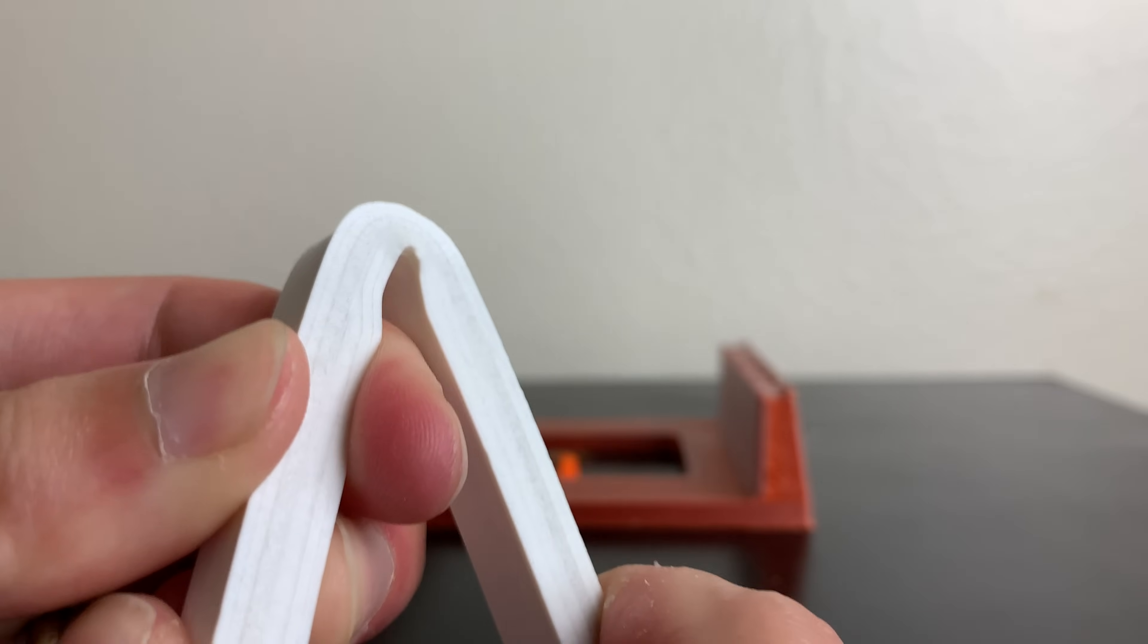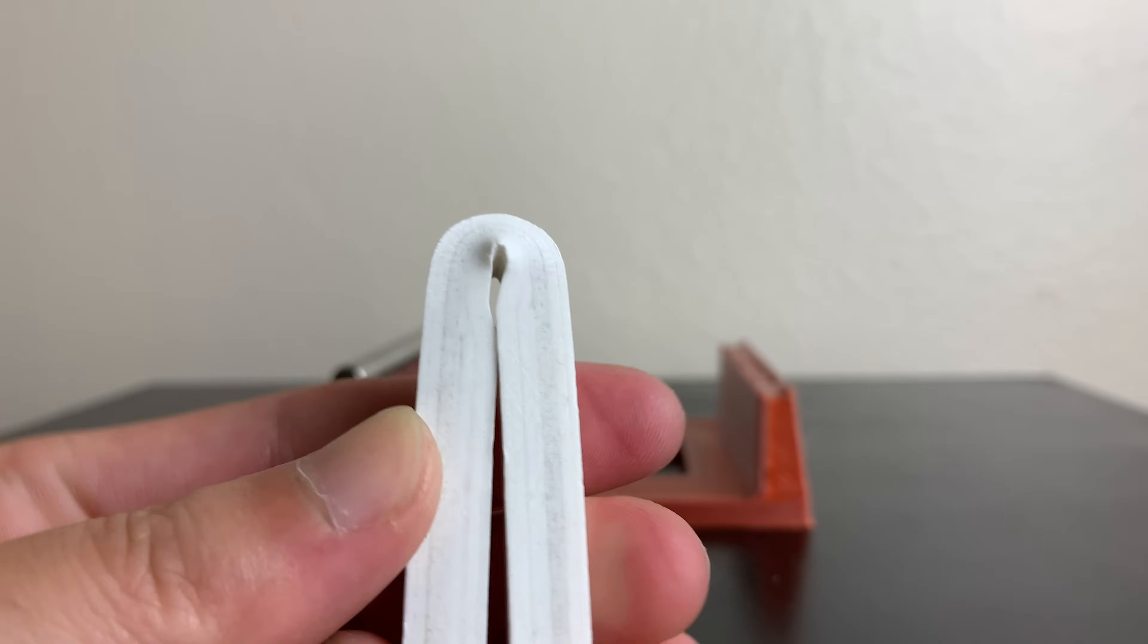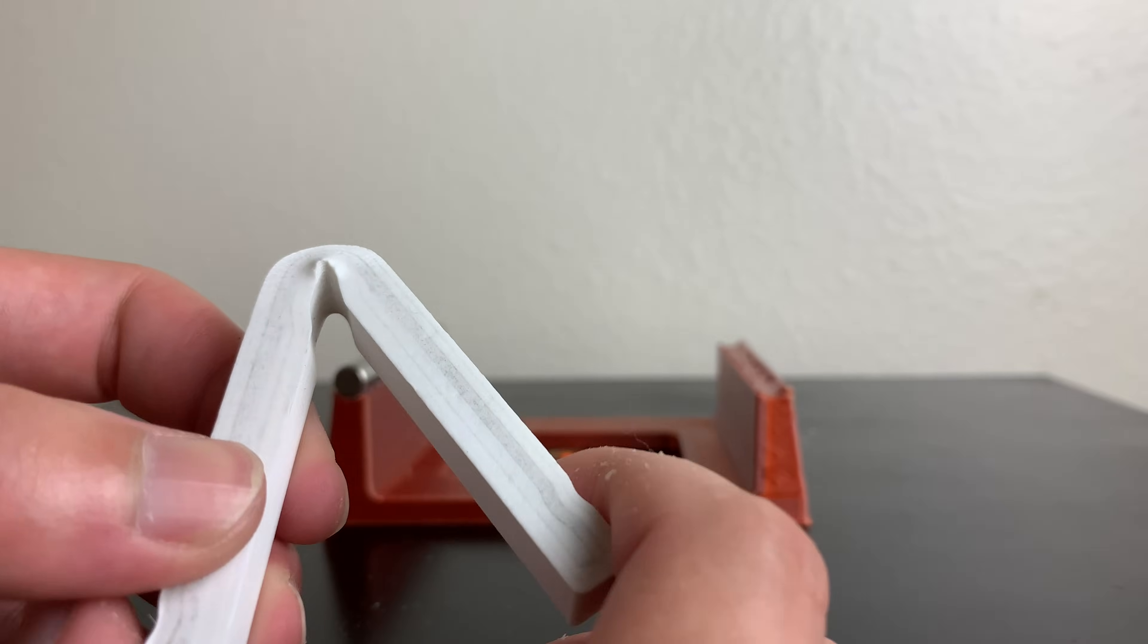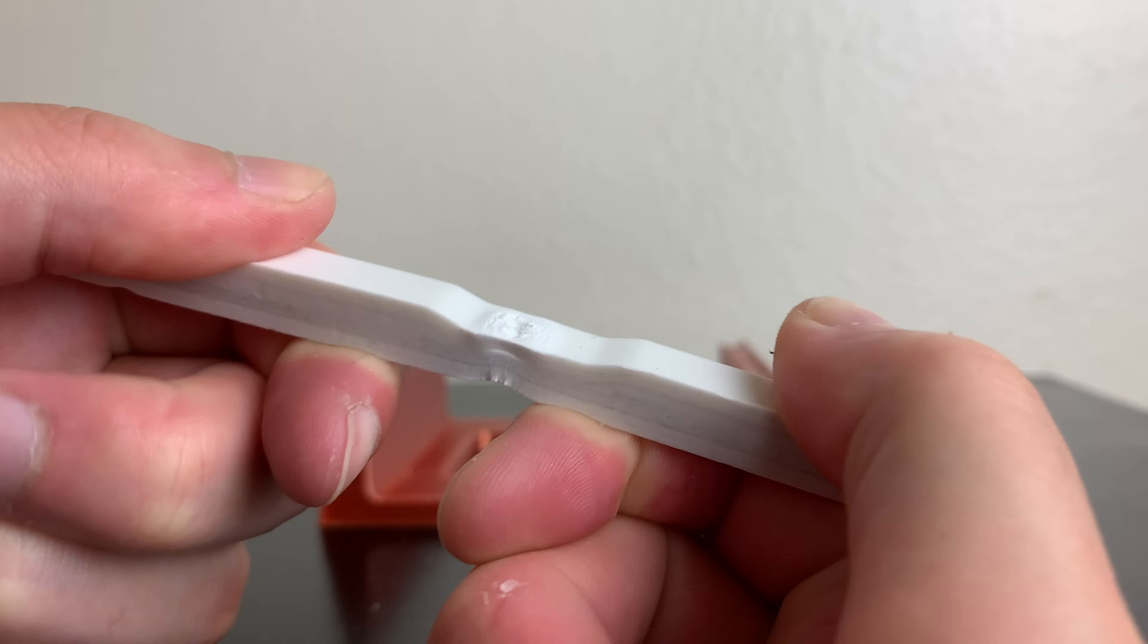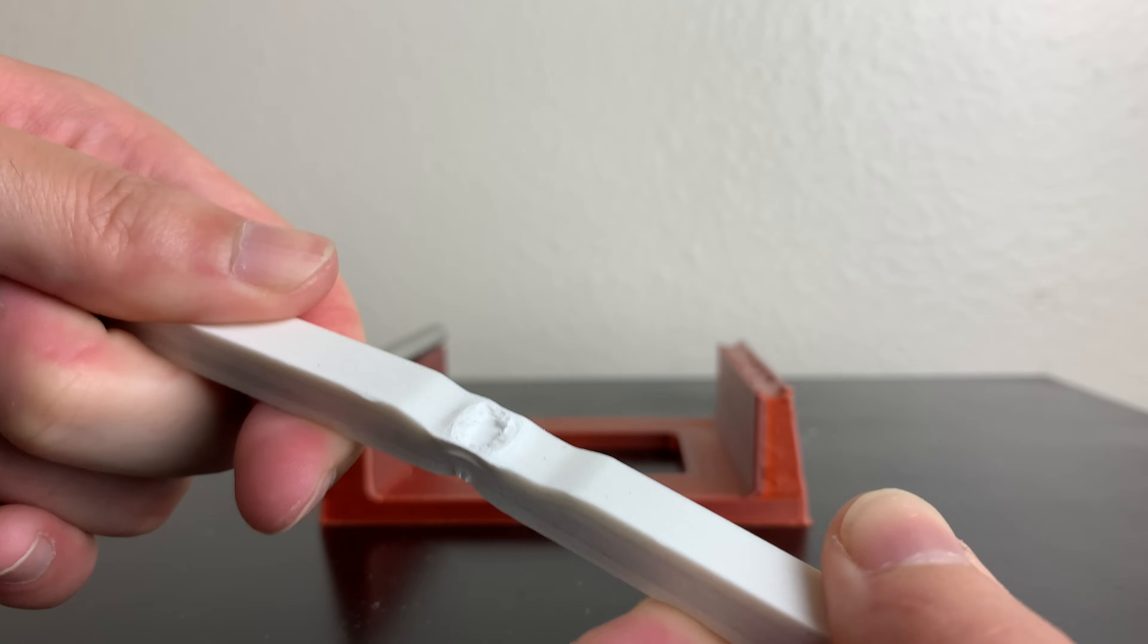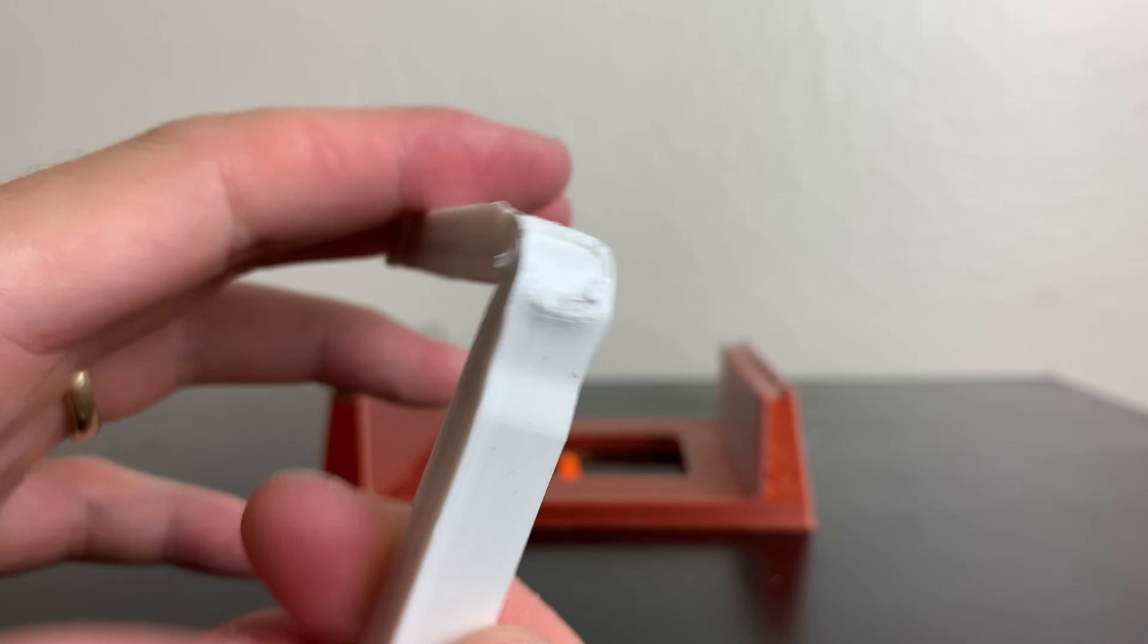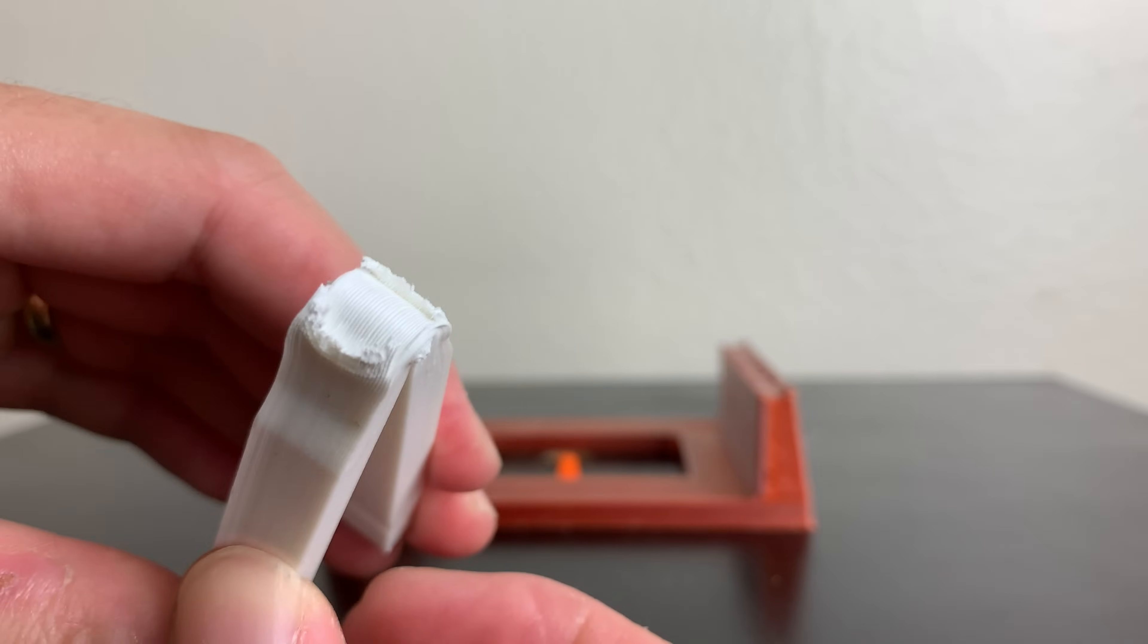And this is because PLA is extremely ductile, basically it's the opposite of brittle. It doesn't snap. It's actually amazing how many times I could bend it before the material starts tearing.